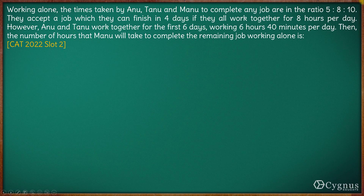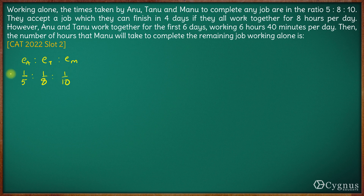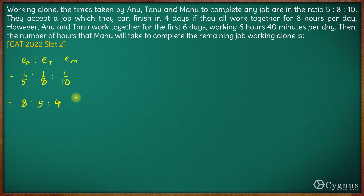We know the ratio of efficiency is reciprocal to the ratio of time taken. So the ratio of efficiencies of Anu, Tanu, and Manu will be 1/5 : 1/8 : 1/10. Once we simplify this, it comes out to be 8:5:4. So the ratio of their efficiencies is 8:5:4.